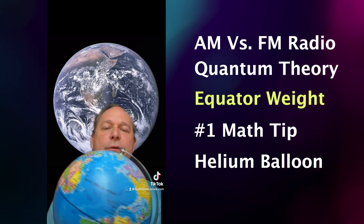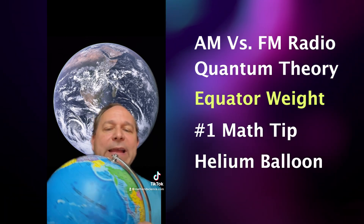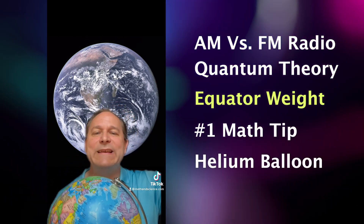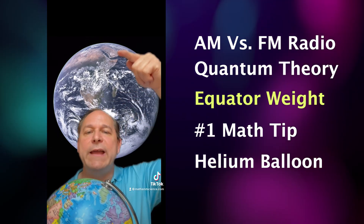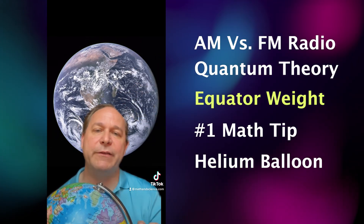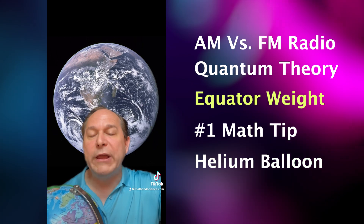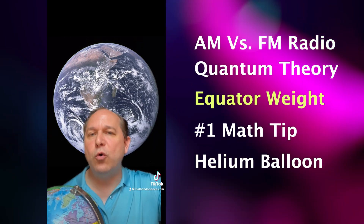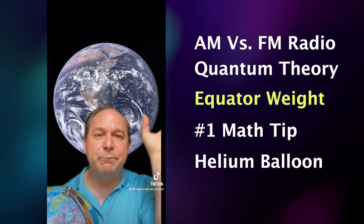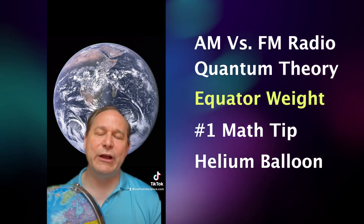We think of the Earth as a perfect sphere, but as it's rotating, it's slightly bulged in the center — the middle area — compared to the top at the poles. So actually, the farther away you are from the center of the Earth at the equator, because of this bulging, is one of the reasons why you're going to weigh less there.